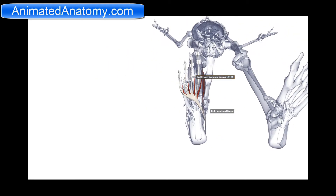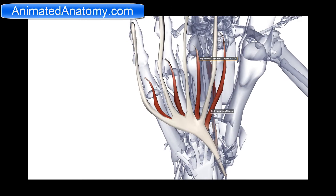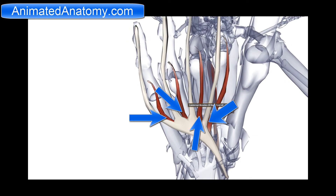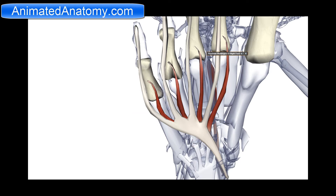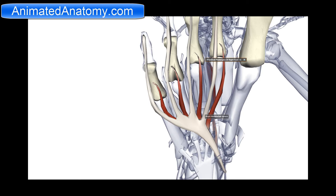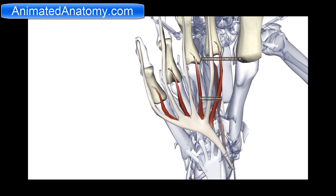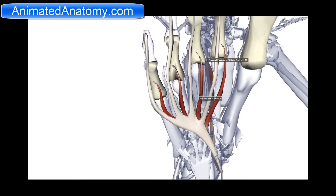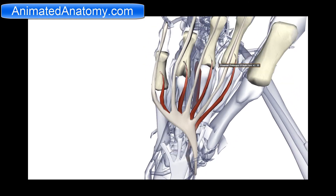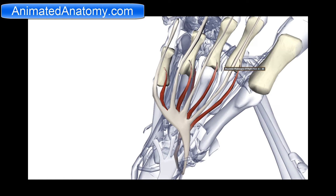From its tendon we have the lumbrical muscles arising, and that's the origin of these lumbrical muscles. The insertion of the lumbrical muscles is the plantar aponeurosis, here on the lateral four digits on the plantar side. The function of the lumbrical muscle is to flex the proximal phalanges and to extend the distal phalanges. It is innervated by the plantar nerve, just like the previous three muscles I explained.